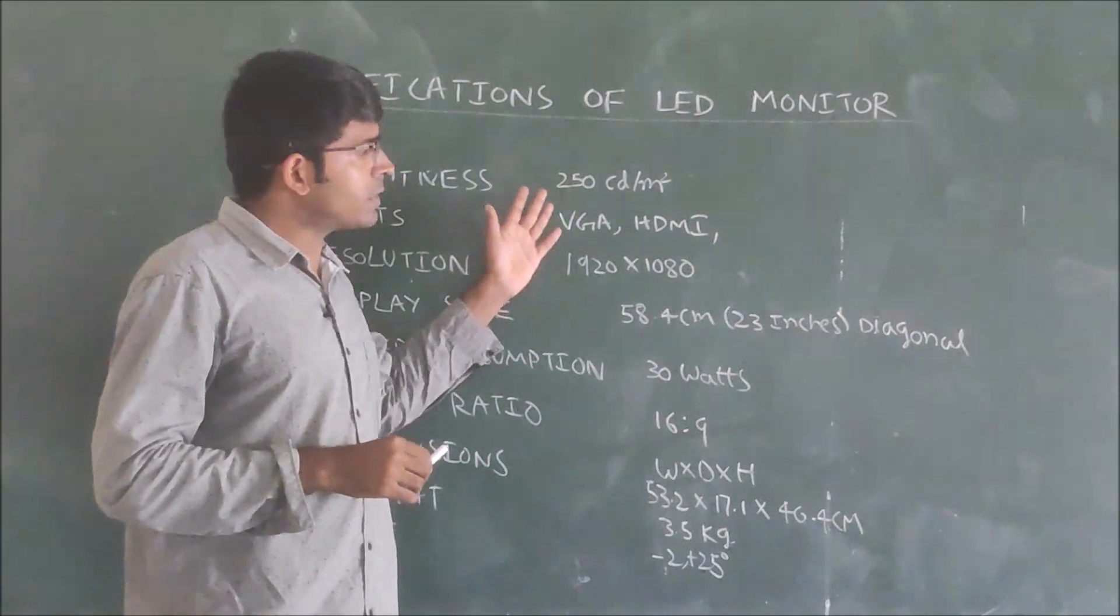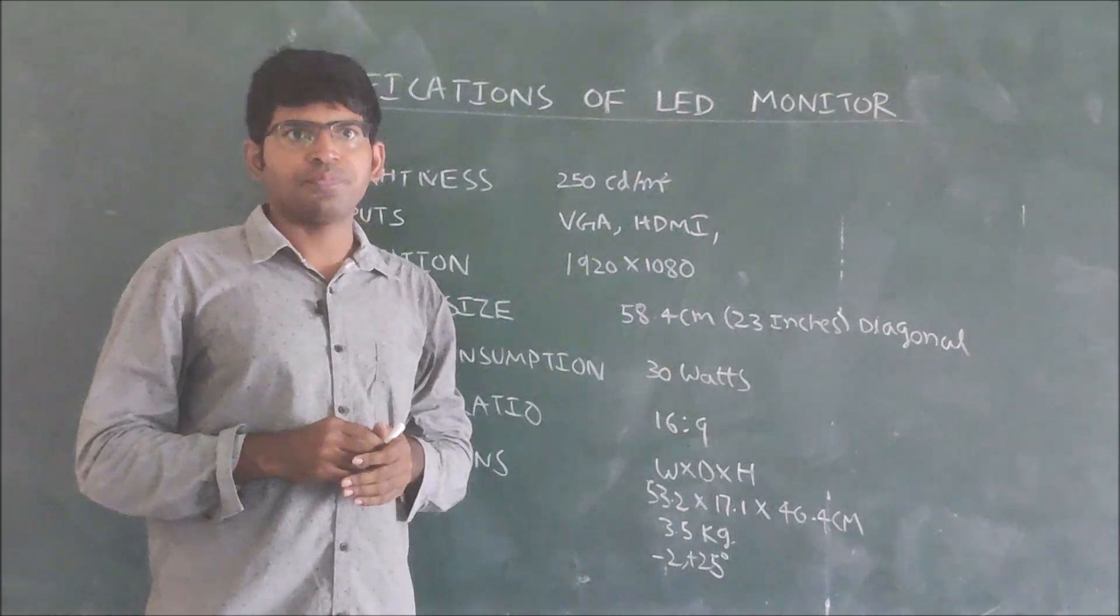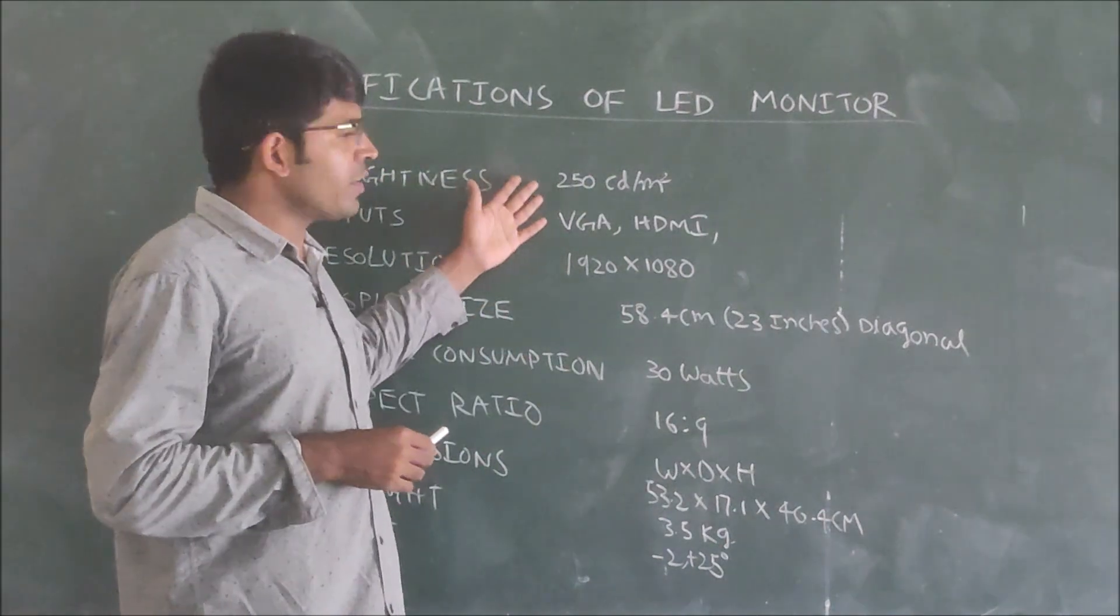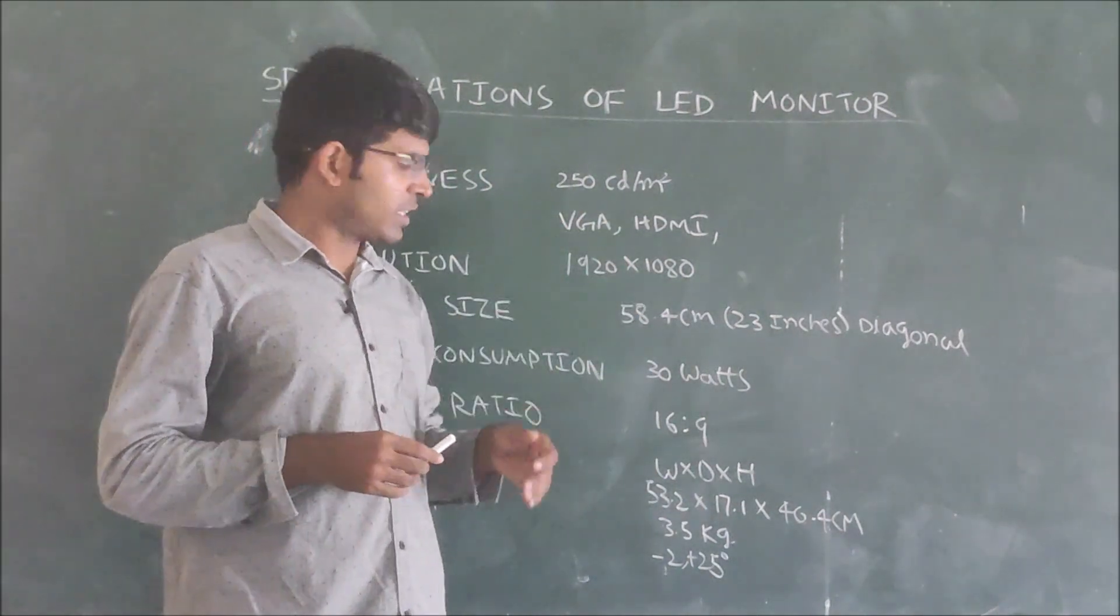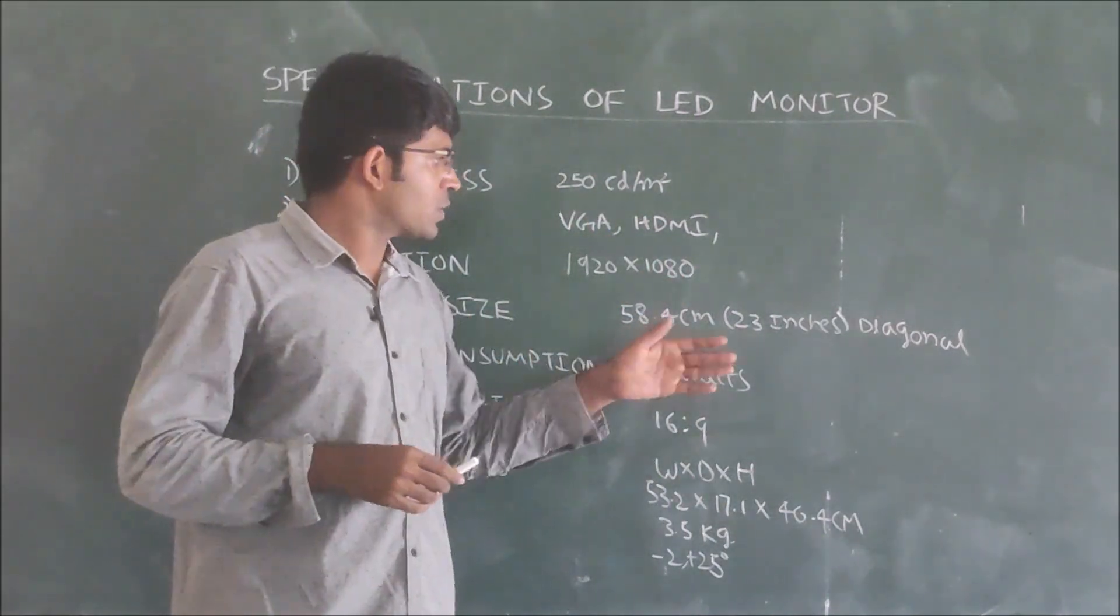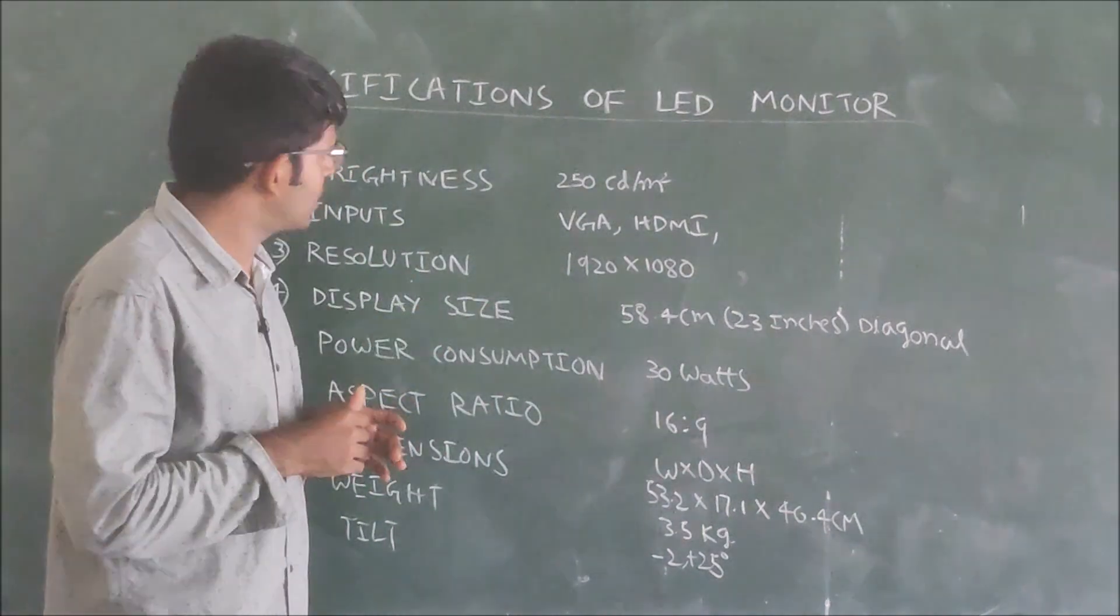The brightness will be measured in cd per meter square, candela - the illumination. Generally we have given normal specifications of 58.4 cm, means 23 inches diagonal LED monitor. We have given the specifications.